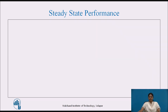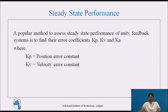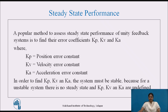Steady State Performance: A popular method to assess steady state performance of a unity feedback system is to find their error coefficients Kp, Kv and Ka, where Kp is the position error constant, Kv is the velocity error constant, and Ka is the acceleration error constant. In order to find Kp, Kv and Ka, the system must be stable, because for an unstable system there is no steady state and Kp, Kv and Ka are undefined.